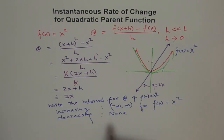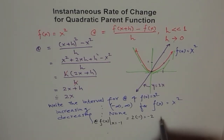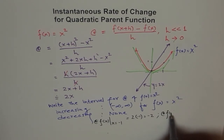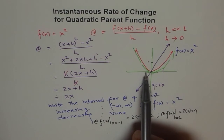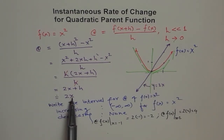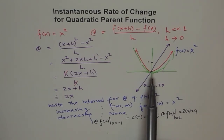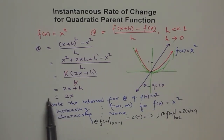If the question is: find the rate of change of f(x) at x = −1, it will be 2 × (−1) = −2. And if asked for the rate of change at x = 2, it will be 2 × 2 = 4. At x = 0, the rate of change is 0 — horizontal. If asked where the rate of change equals 6, you set 2x = 6, giving x = 3. So at x = 3, the instantaneous rate of change of the quadratic parent function is 6. That is how you answer related questions.